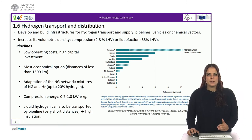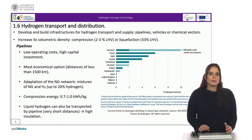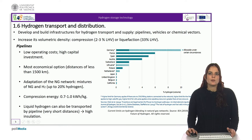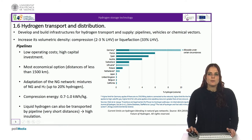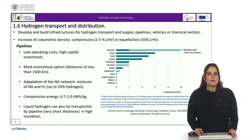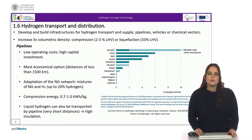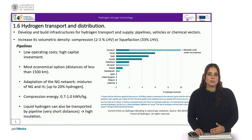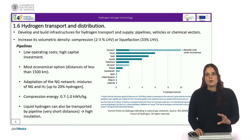Liquid hydrogen can also be transported by pipeline. However, liquid hydrogen pipelines have been achieved only over very short distances, as they require careful insulation in order to maintain cryogenic temperature and prevent the formation of a dual-phase liquid-gas state.